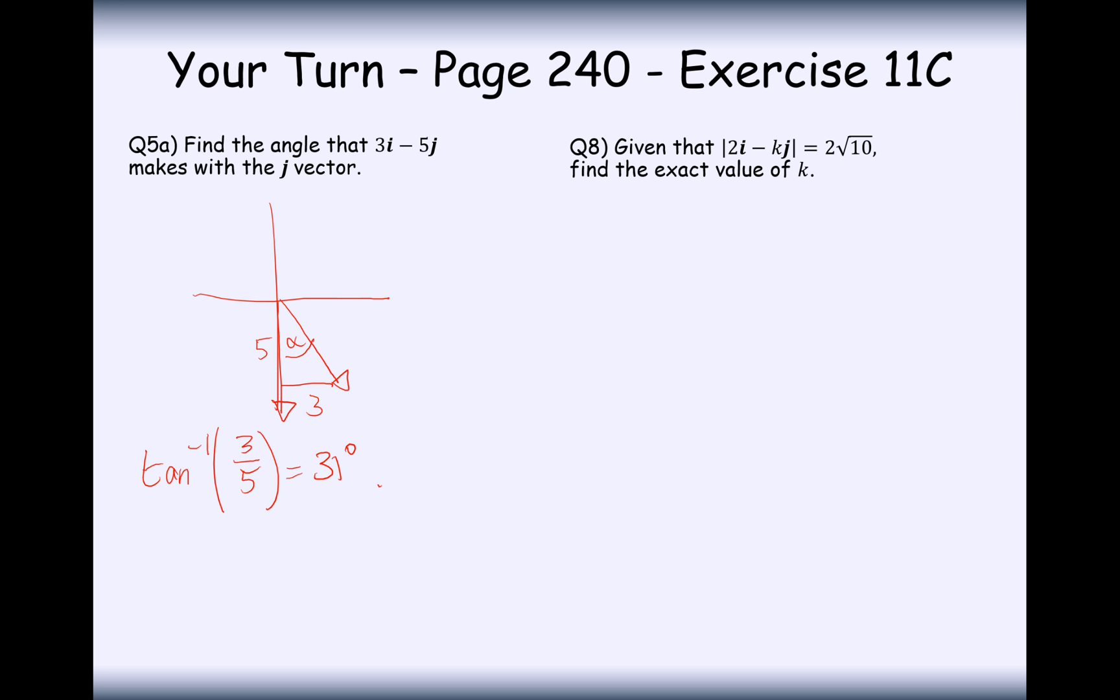Next question. Given that 2i minus kj equals 2 root 10, find the exact value of k.